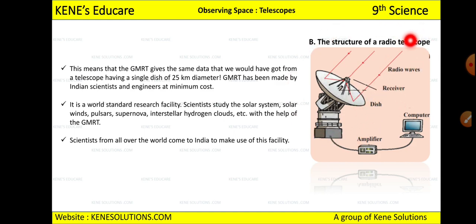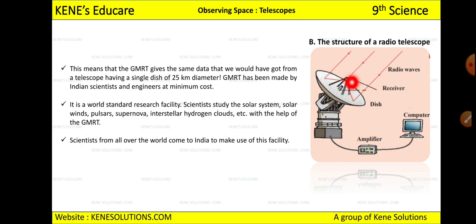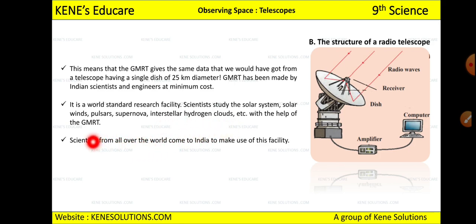Radio waves come to the dish, deflect from the dish to the receiver, and the receiver is connected to the computer through an amplifier. The computer then gives you the exact image of the source — identifying which planet the wave came from. GMRT is a world-standard research facility used to study the solar system, solar wind, pulsars, supernovae, and interstellar hydrogen clouds.